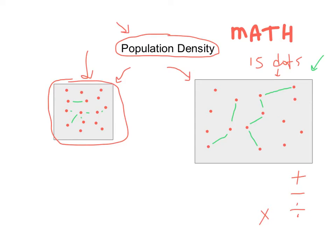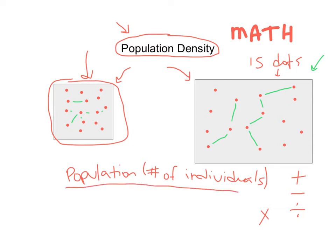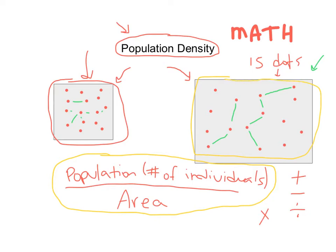So what is the formula for population density? It is the population, or number of individuals — number of gophers, birds, people, whatever — and then you're going to divide that by how big is the area. That is the formula for figuring out population density: population or number of individuals divided by the area those organisms are in.